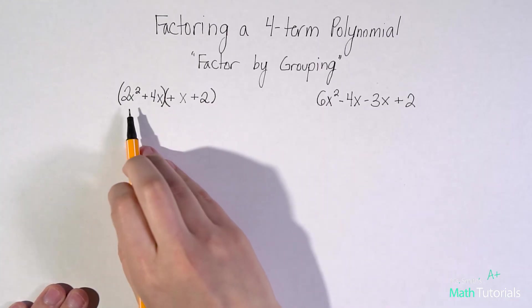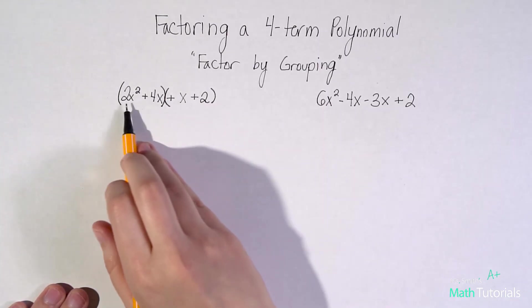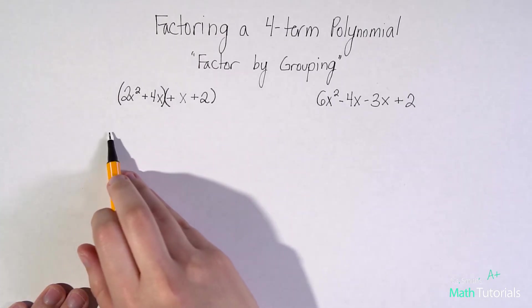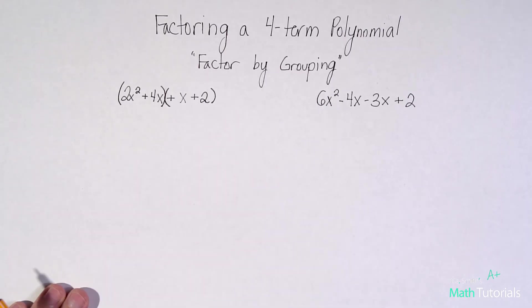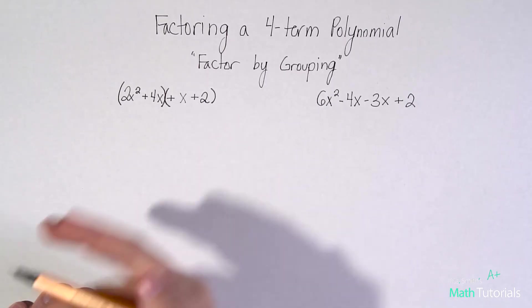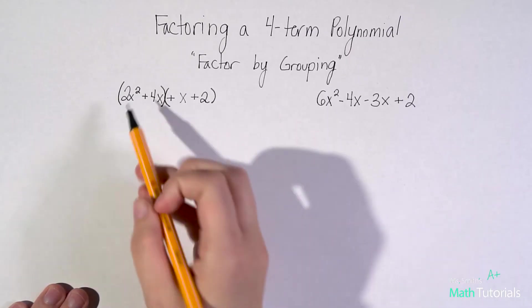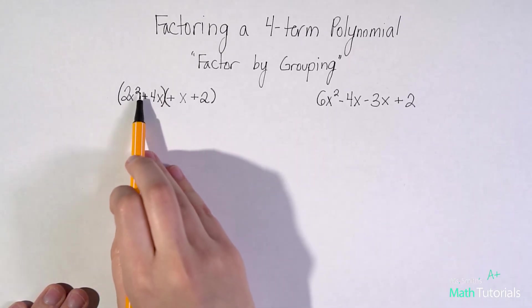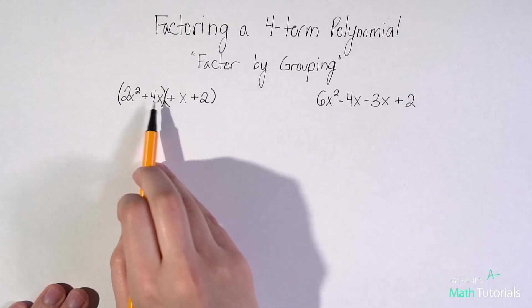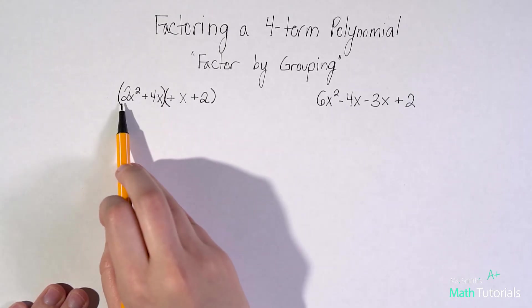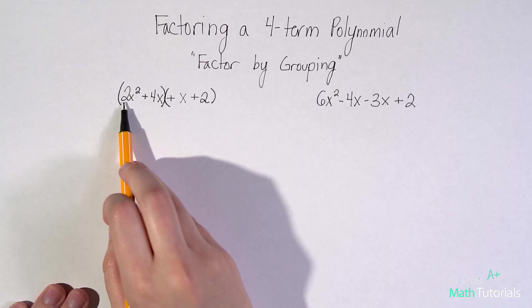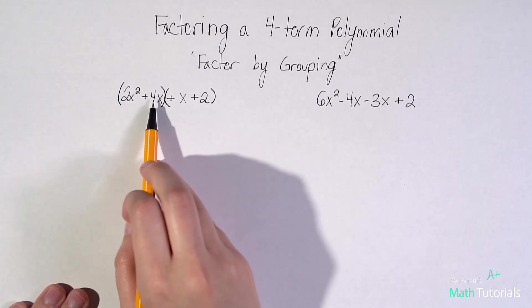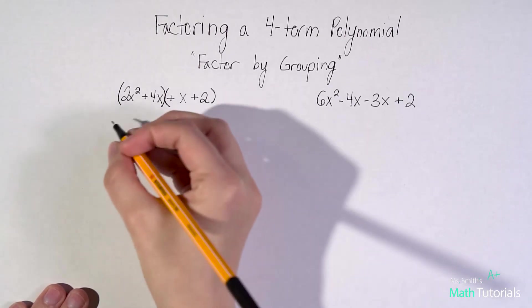Now to factor by grouping, I'm going to figure out what is my GCF of my first group, and I'm going to pull it out and factor what I would have left. So literally factoring out the GCF just of the first group. So let's think. I've got 2x squared plus 4x. So as far as my numbers, 2 and 4, I need the GCF. So 2 goes into 2, and I know 2 goes into 4, so my number will be 2.